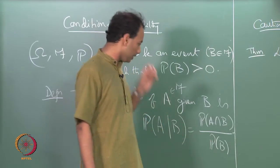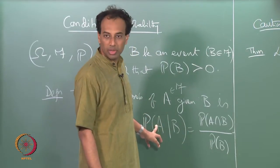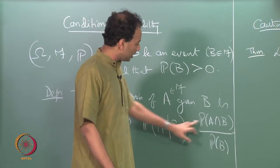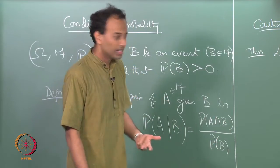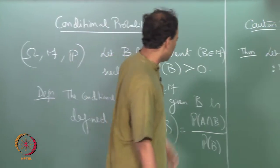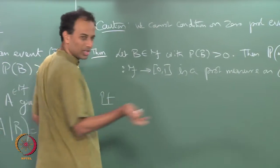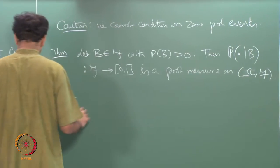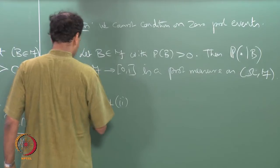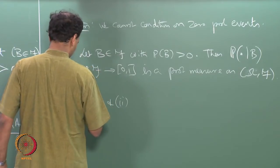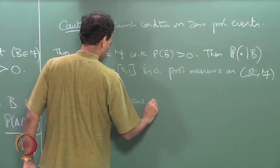Similarly, if A is the whole sample space then omega intersection B will be B, so you will get 1. Finally, to verify countable additivity. The first two properties are easy.